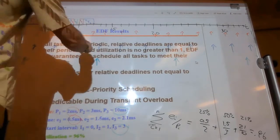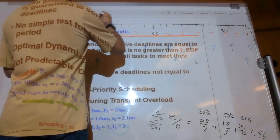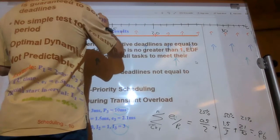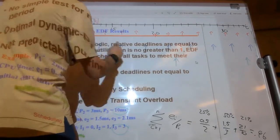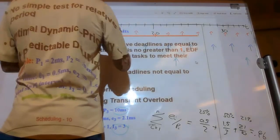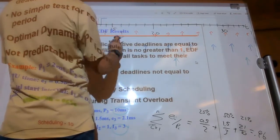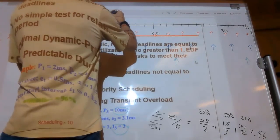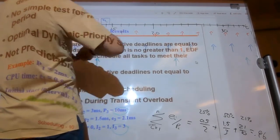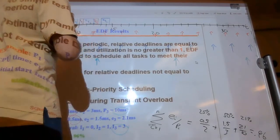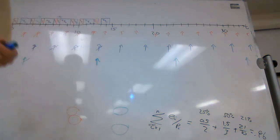A new task releases and it's the only one on the ready queue. Then two more release with earlier deadlines, so task two runs at this point. These two tasks have the same deadline so task two continues to finish. That one is done. Now we have the remaining two tasks — this one has the earlier deadline and runs to completion.